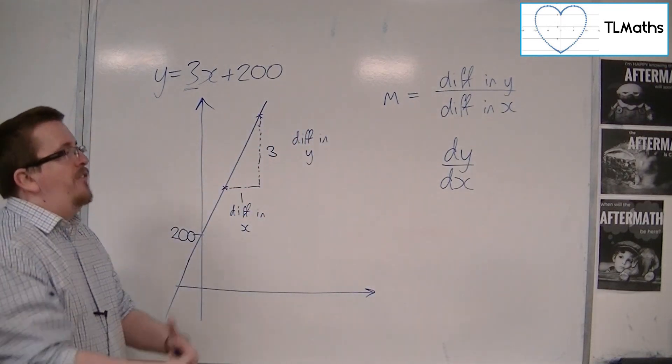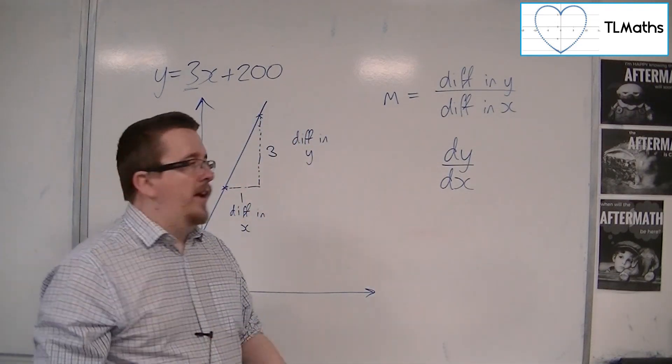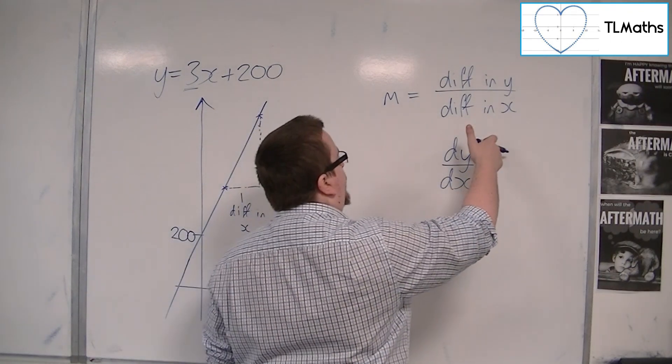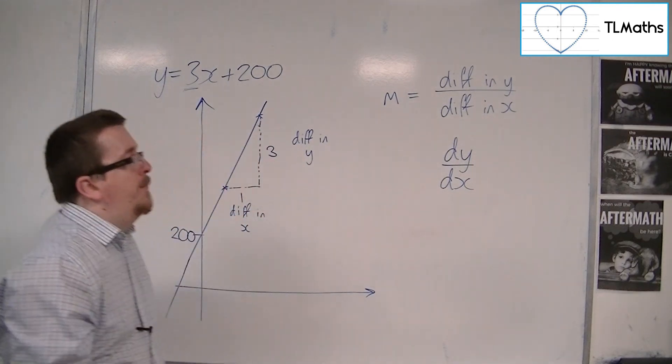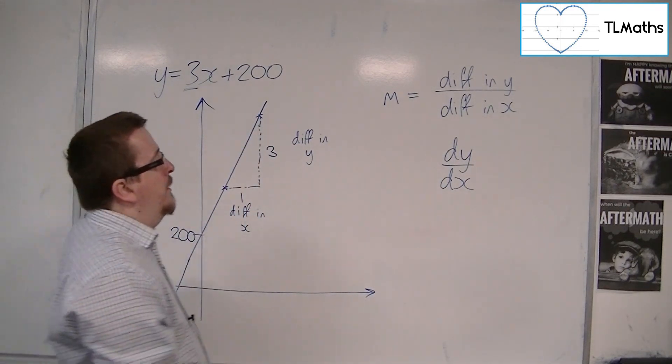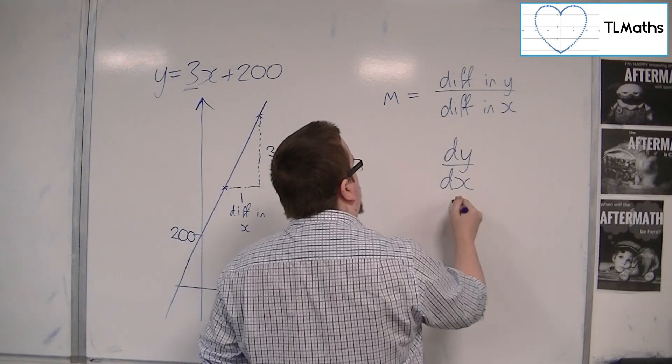And you can effectively look at it at this early stage as the difference in y divided by the difference in x. Exactly as we had before, but a shorthand notation. And this represents the gradient function.